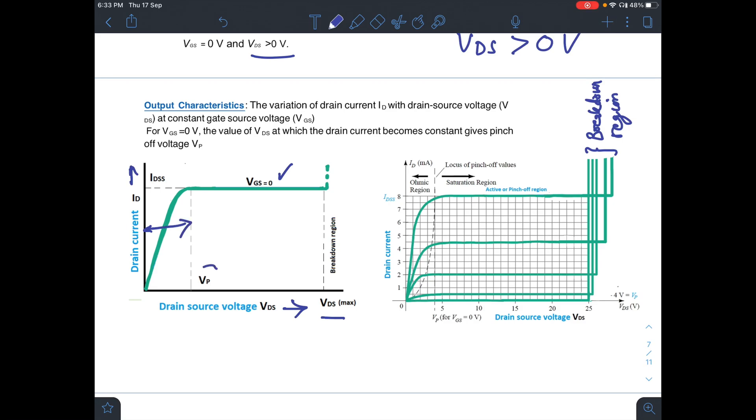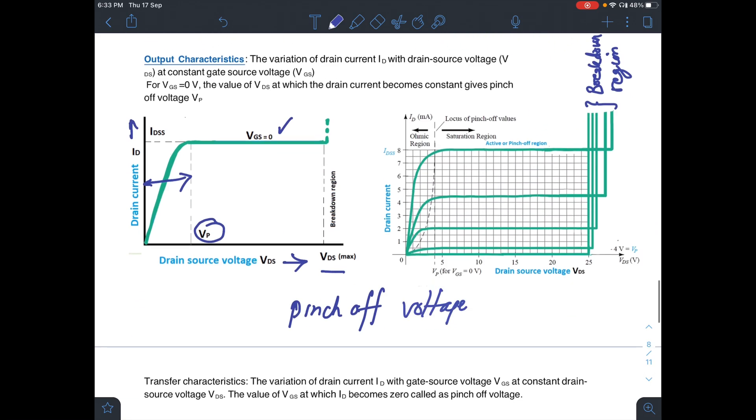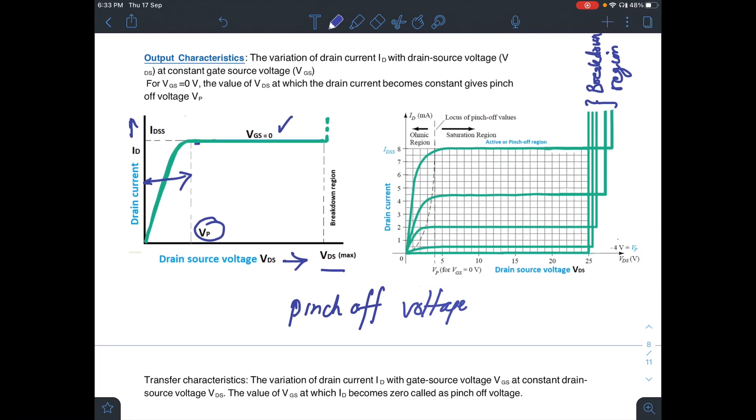When this reaches a voltage known as pinch-off voltage, this depletion layer will grow and they will virtually touch each other. If they touch each other, that means there would be no ID, but this pinch-off voltage is a misnomer. There is still some passage and a current of very high density flows through this channel, making it at a constant saturation level IDSS.